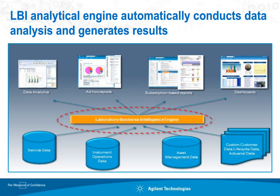This graphic represents how our LBI engine collects data from multiple sources. There's service data — your preventive maintenance, qualification data, repairs, parts replaced, when it was done, and who it was done by. There's the instrument operations data — how many injections it has run, what kind of utilization is going on, and whether it's reporting a lot of error messages. Then asset management data — where it is in terms of inventory, for example whether it's in your lab in New Jersey or your research lab in Germany.